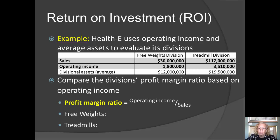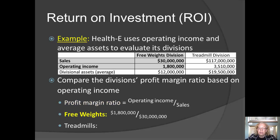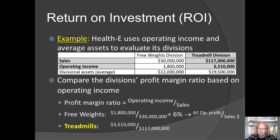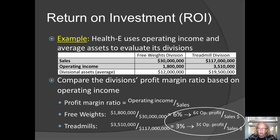So let's take a look at these two ratios for Healthy. The formula for the profit margin ratio is operating income divided by sales revenue. For the free weights division, that works out to 6% — in other words, the free weights division is keeping 6 cents of operating profit out of each sales dollar. By contrast, the treadmill division is keeping 3 cents out of each sales dollar. So the free weights division is better at holding on to more pennies out of each sales dollar.